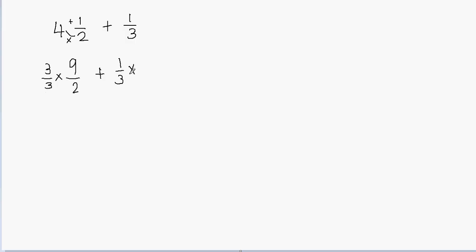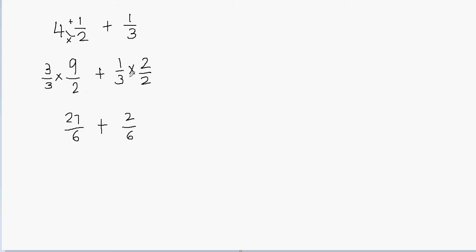Now let's multiply this fraction. I have to multiply this fraction with the other fraction's denominator. The denominator here is 2, so I can multiply this by 2 over 2. Now we can go ahead and multiply the numerators: 3 times 9 will be equal to 27, and then denominators 3 times 2 is equal to 6. Then I have a plus sign in between. 1 times 2 will be 2 and 3 times 2 will be 6. Now you can see that I have the same denominators.